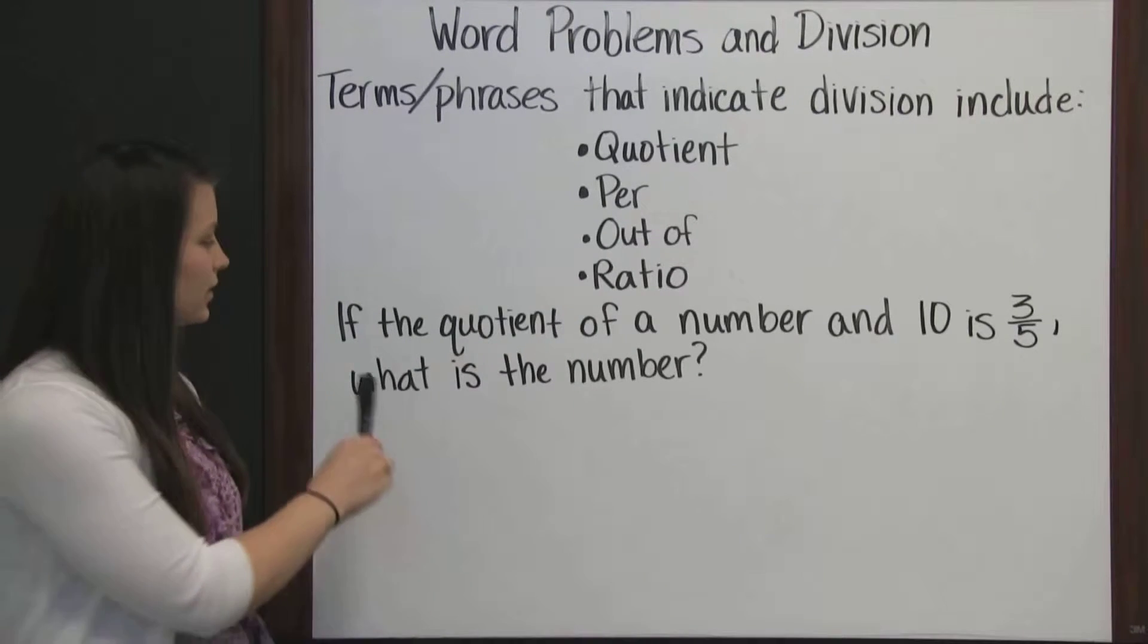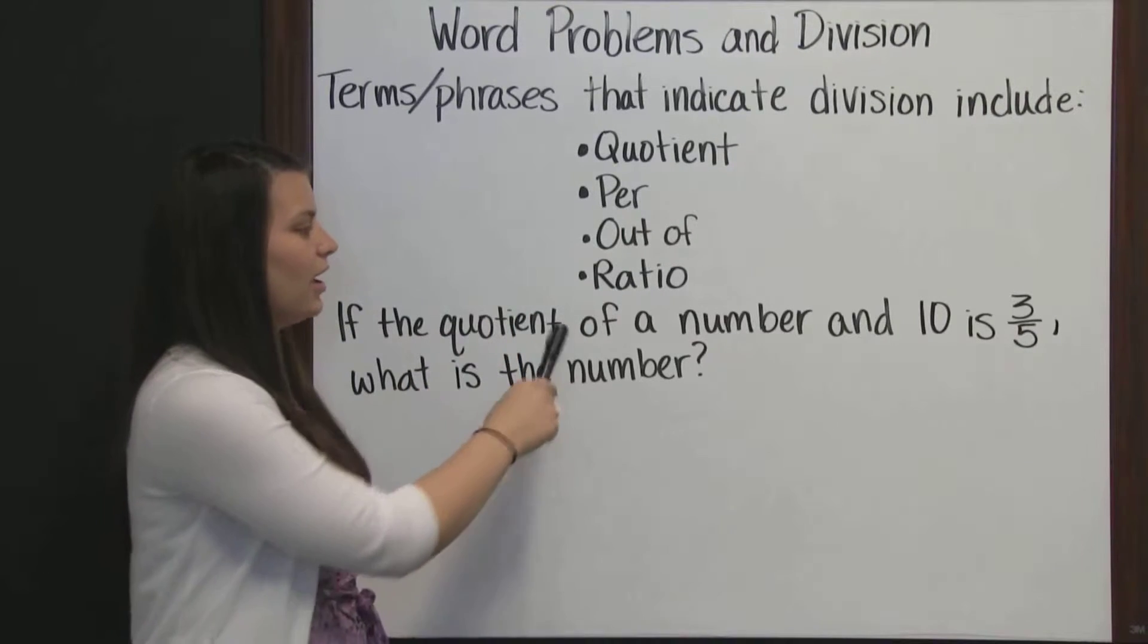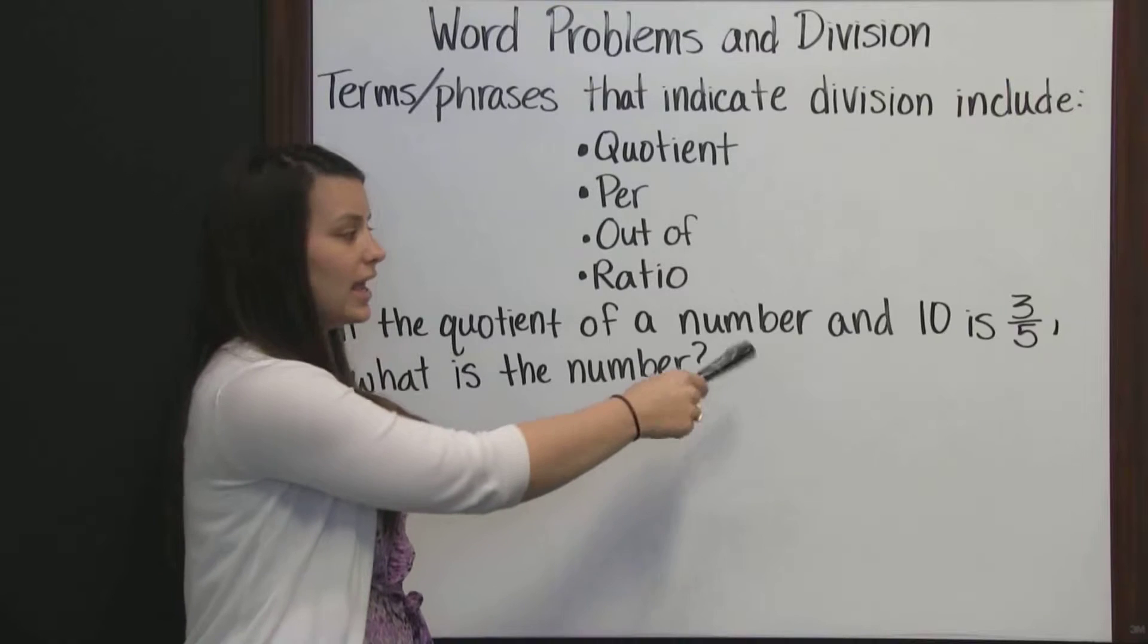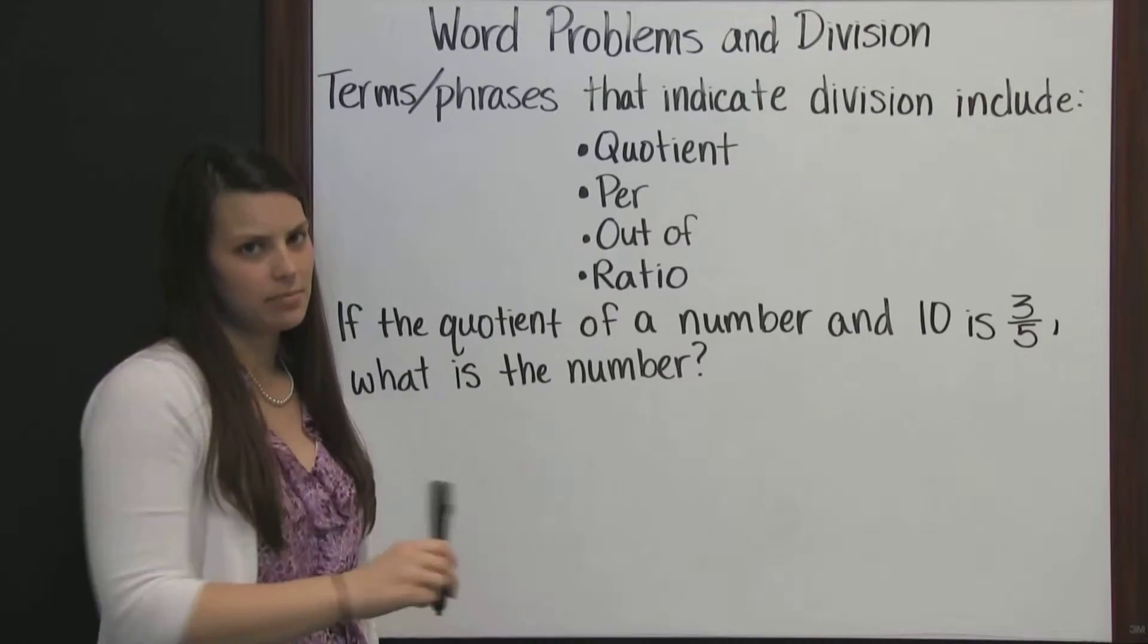Let's look at an example. If the quotient, there's one of our key words, of a number and ten is three-fifths, what is the number?